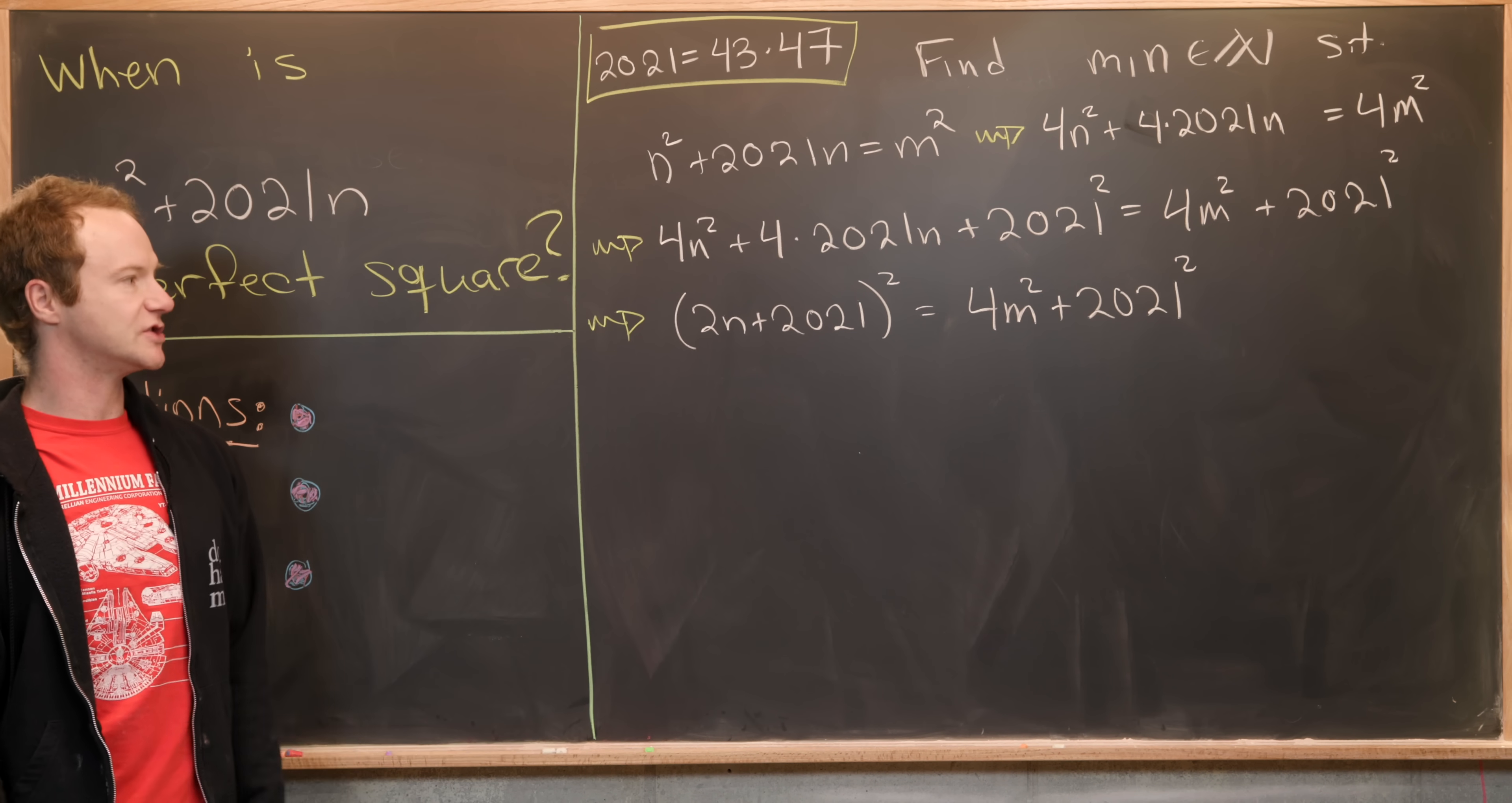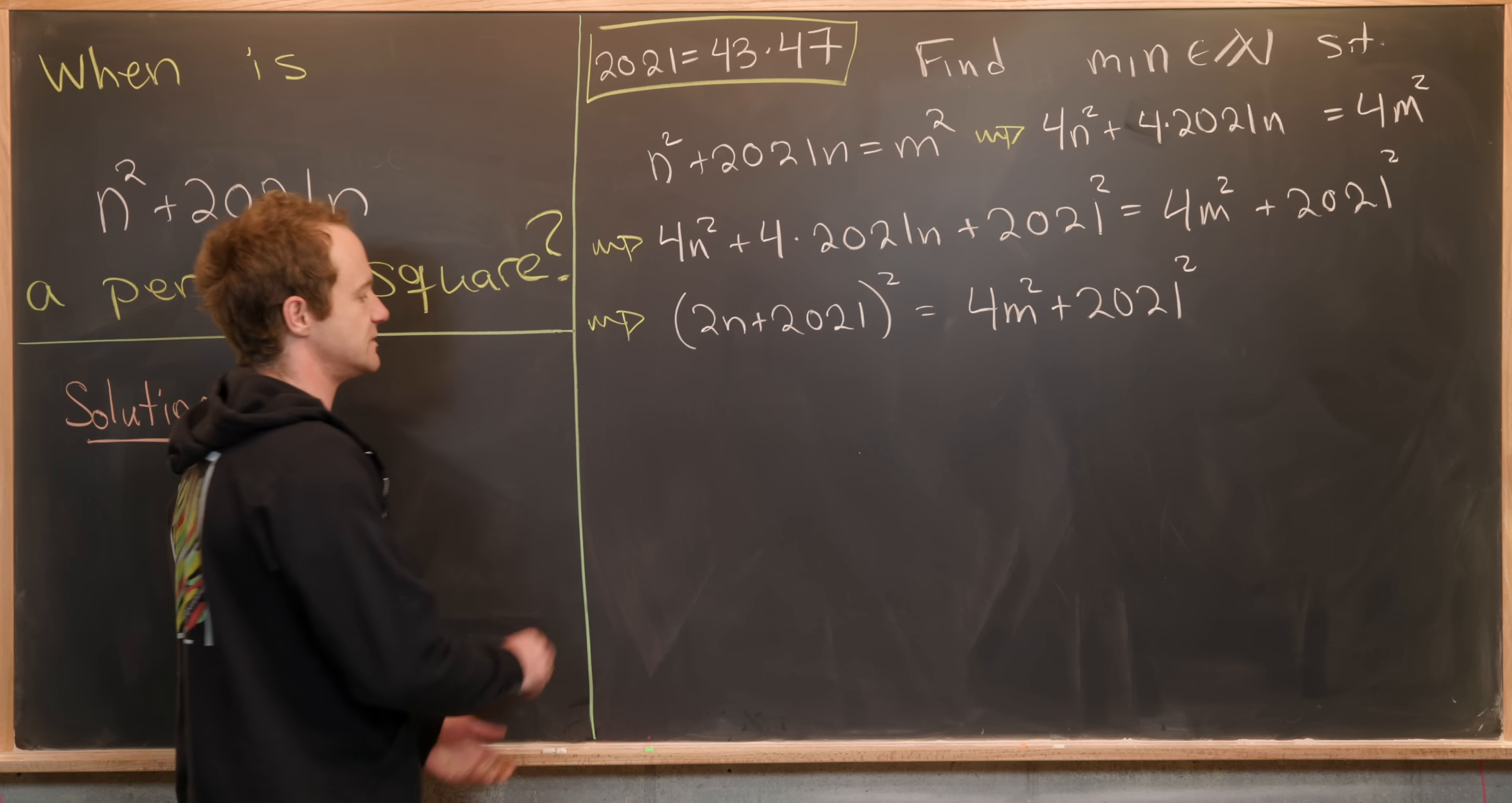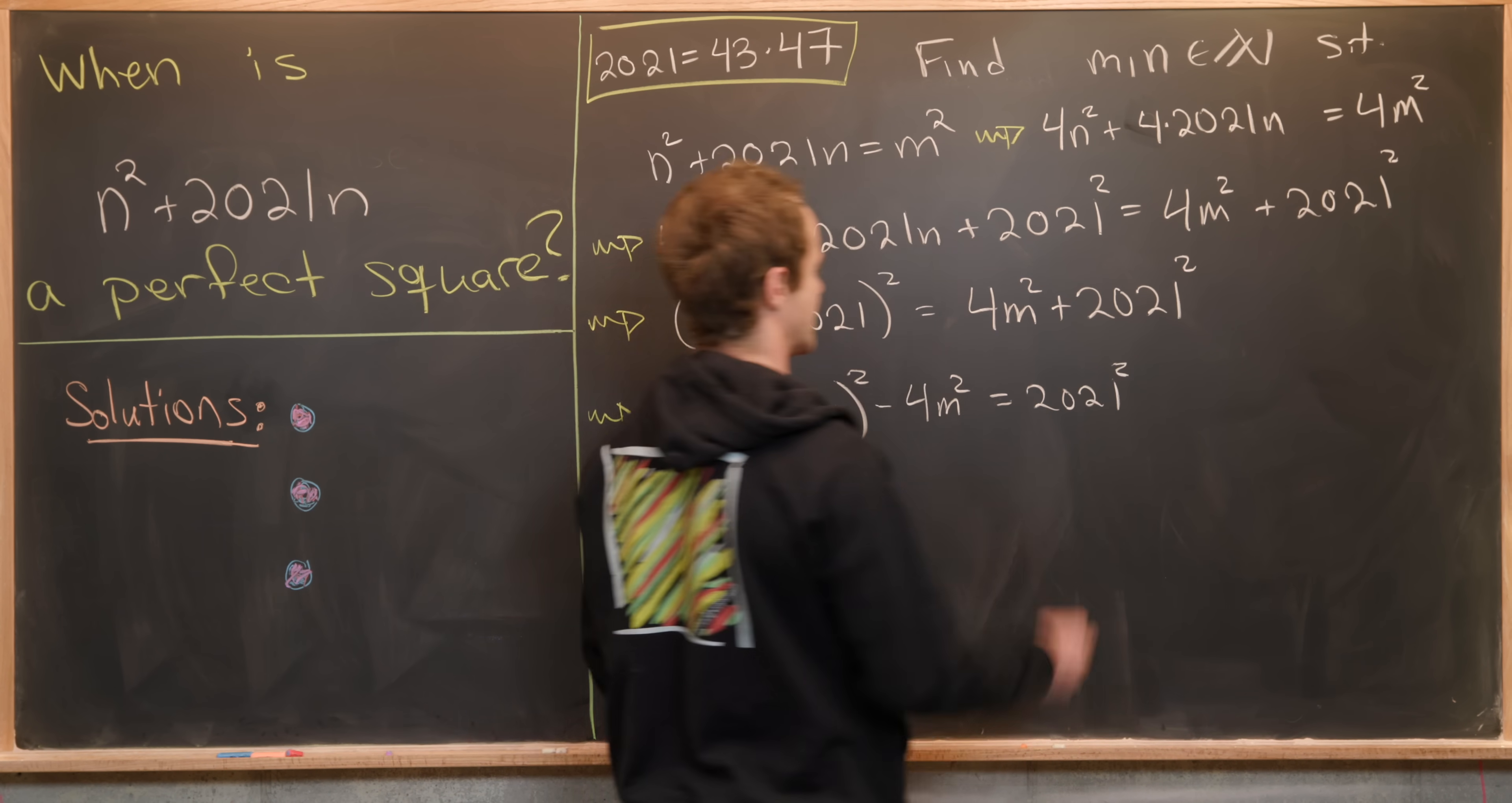And now we're in good shape because we can move all of our variables to one side of the equation and have a constant on the other side of the equation, our constant being 2021 squared. So let's maybe go ahead and do that.